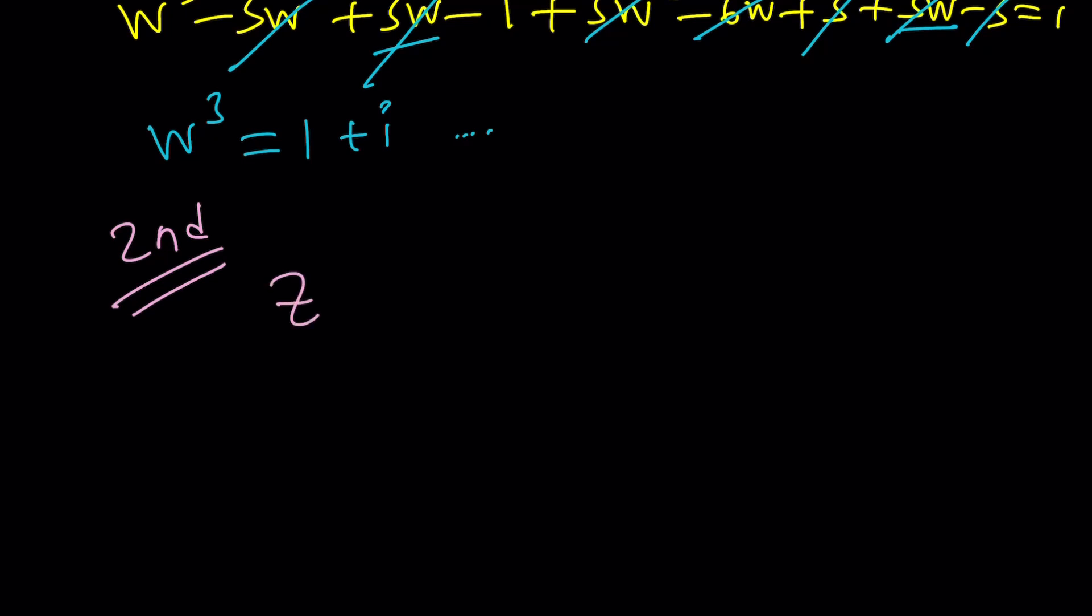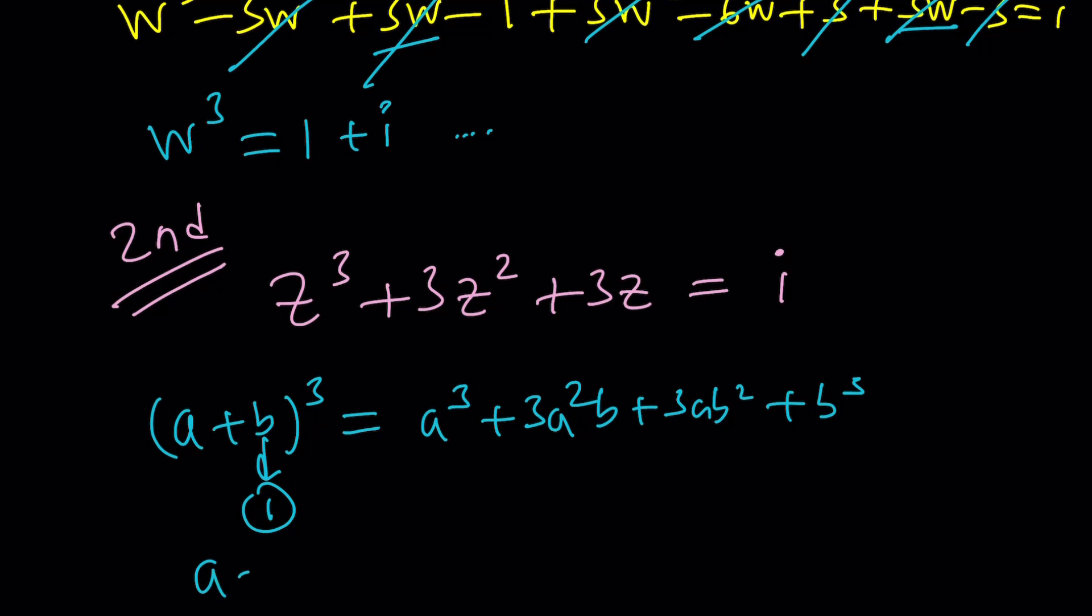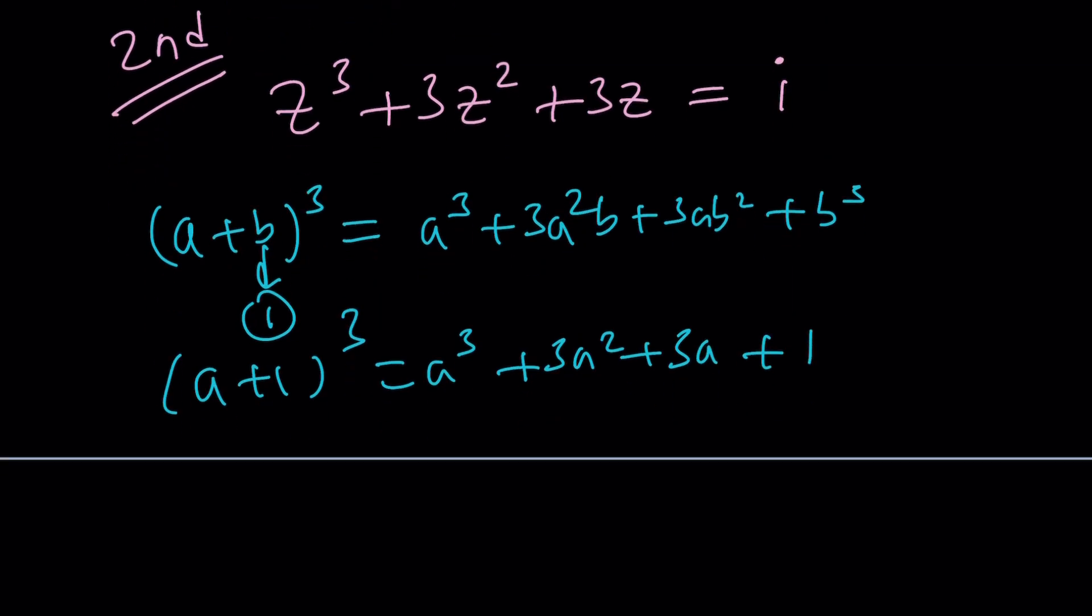So here's my second method. As soon as you saw a problem like this you should immediately remember one thing: the binomial theorem. What does the binomial theorem say? It just says if you have a plus b cubed it's a cubed plus 3a squared b plus 3ab squared plus b cubed and if b is equal to 1 then you get a plus 1 cubed which is a cubed plus 3a squared plus 3a plus 1. That kind of looks like our expression except we don't have the plus 1 at the end. But we have an i on the other side. But notice that this part is familiar.